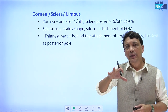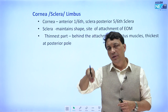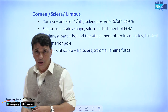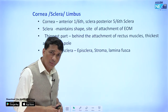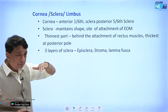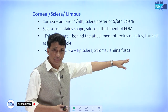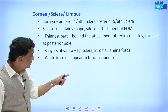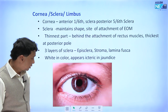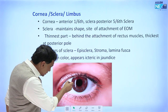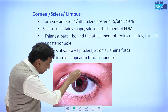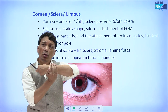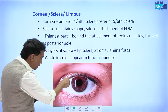There are three layers of the sclera: the episclera, the stroma, and the lamina fusca. The sclera is white in color and appears icteric or yellowish in jaundice. The cornea, by contrast, is thin and transparent — mounted on the sclera like a watch glass. The junction between them is the limbus.